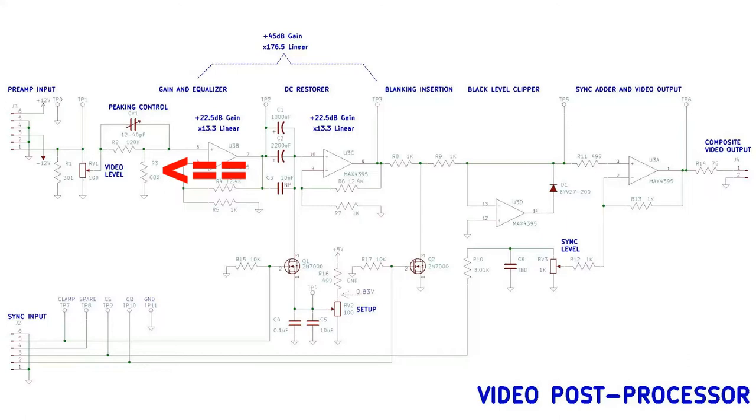We have R2 and R3 forming a voltage divider network. That voltage divider divides the incoming voltage and reduces it by a factor of 177 times. The voltage across R3 is 1 over 177 of the input voltage.